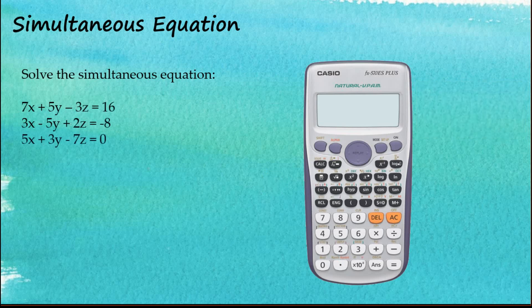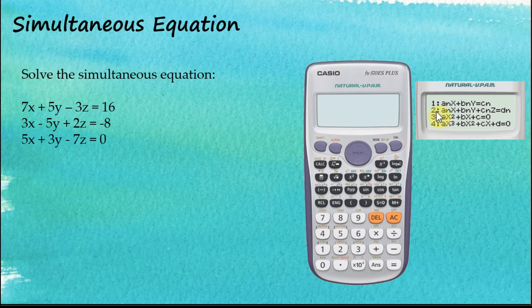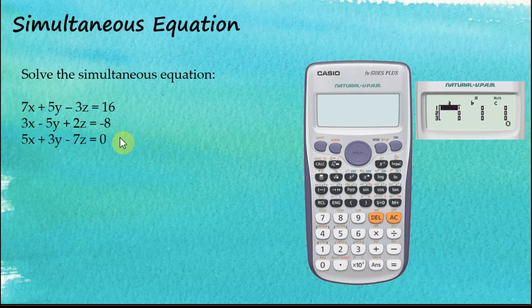Let's see another example. This time let's solve simultaneous equations with three unknowns. To solve an equation with three unknowns we need three equations. Switch on the calculator, go to mode, equations 5, and now we select 2 — this is for simultaneous equations with three unknowns x, y, z. Again, arrange your equations so all variables are on the left-hand side and the constant on the right-hand side, with x first, then y, then z.